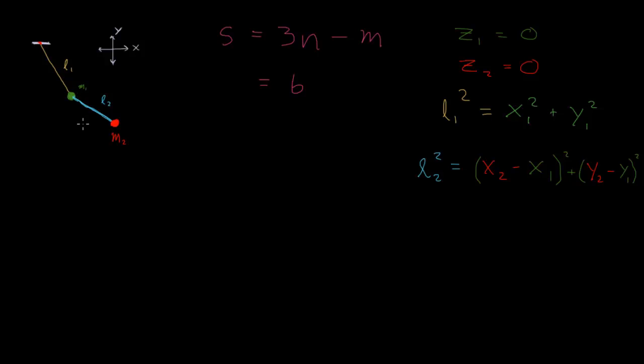We have this circle with this distance here, which is the difference between their x positions, and this distance with their difference in the y directions. The distance between these two masses is fixed, and that's what this equation says.